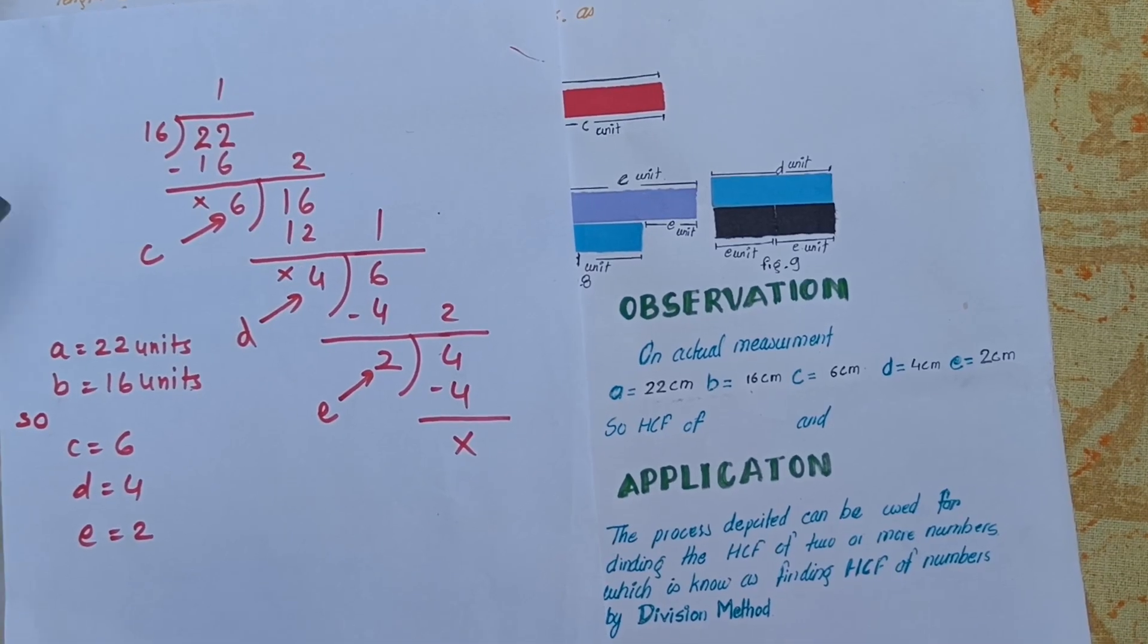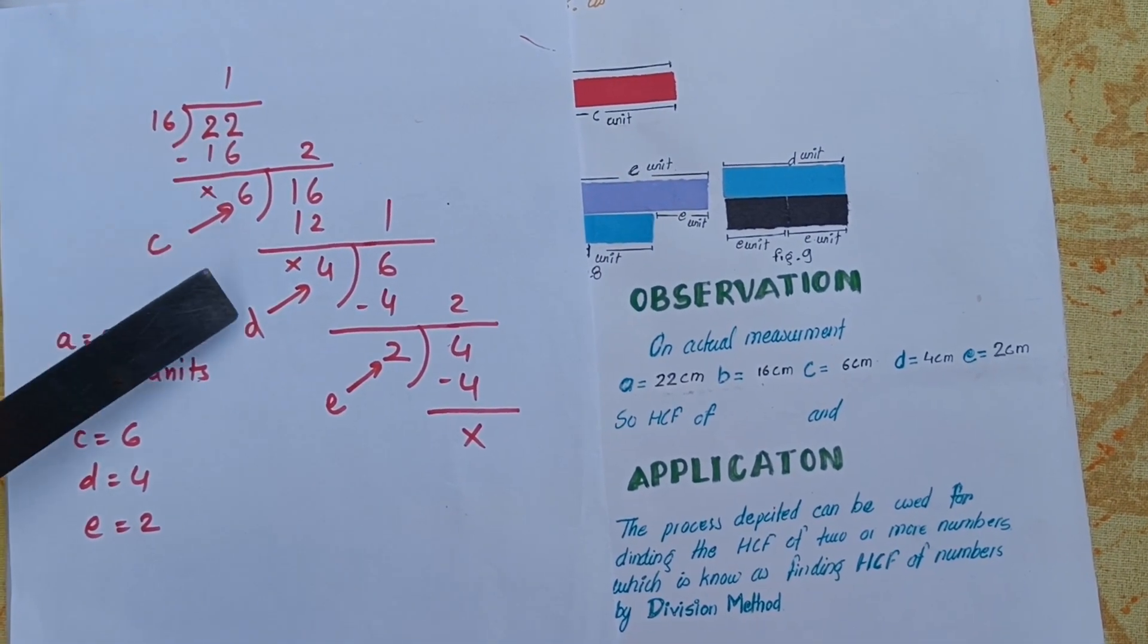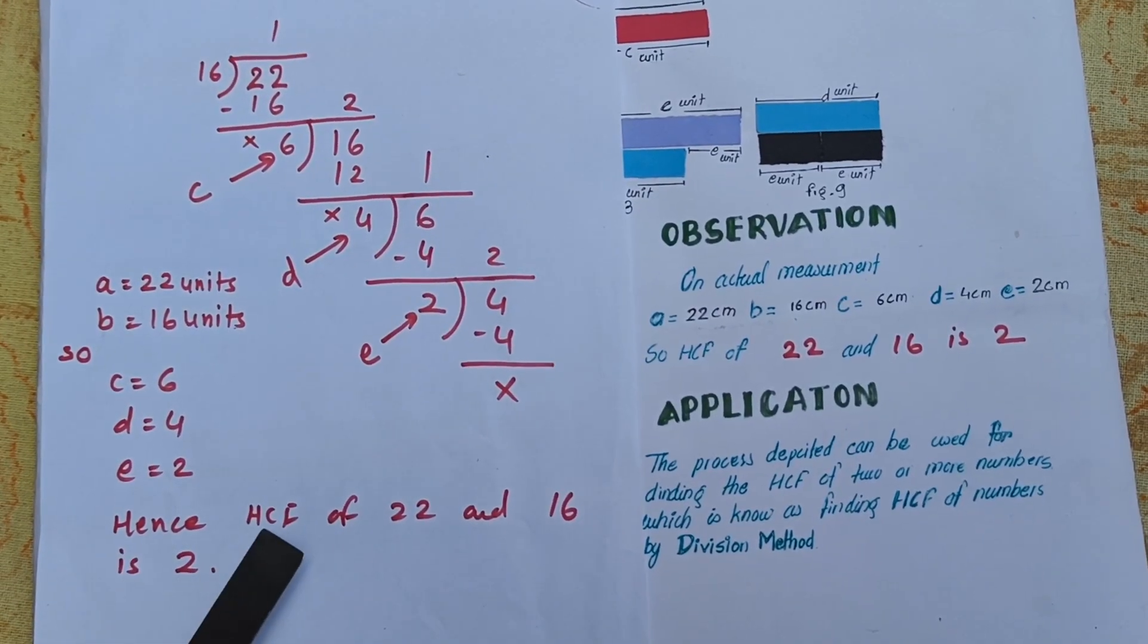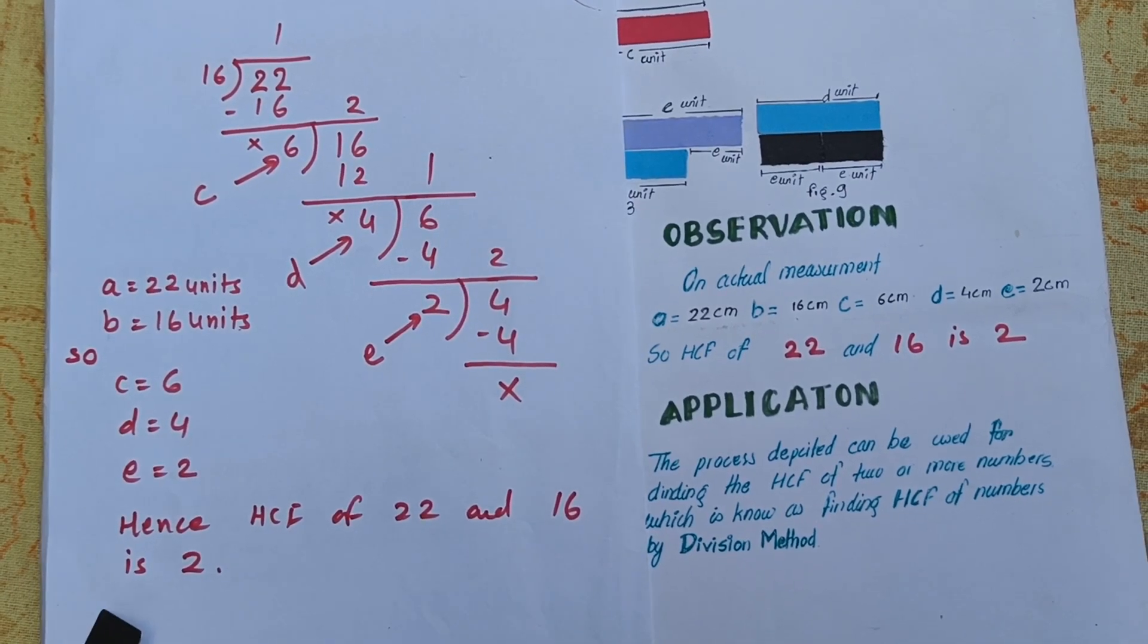So C equals 6, D equals 4, and E equals 2. Hence, HCF of 22 and 16 is 2.